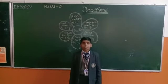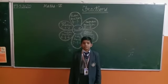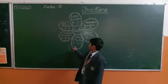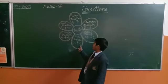Like fraction: the fractions having the same denominator are called like fractions. Example: 2 upon 11, 3 upon 11, and 5 upon 11.